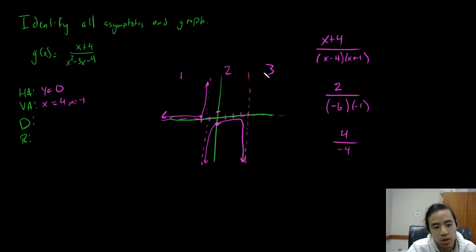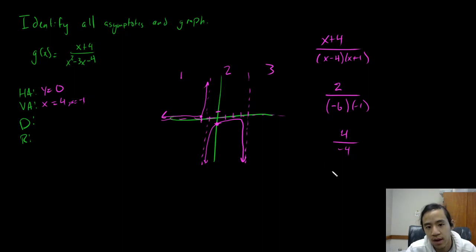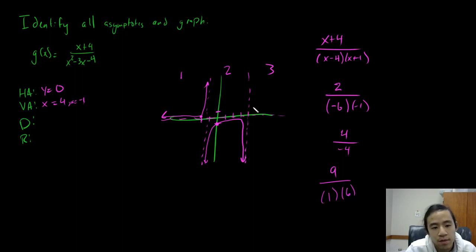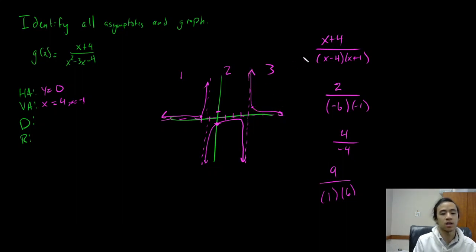For region 3, we plug in anything greater than 4, so let's plug in x equals 5. That gives us 9 over 5 minus 4, which is 1, times 5 plus 1, which is 6. So this is 9 over 6, which is 1 and a half. We can put a point right here and just follow the asymptotes, giving us something like this.